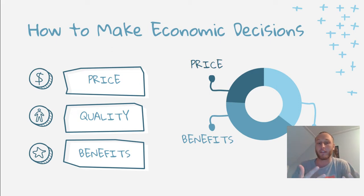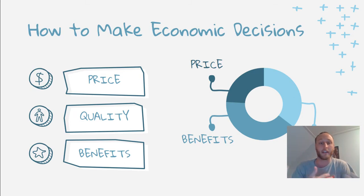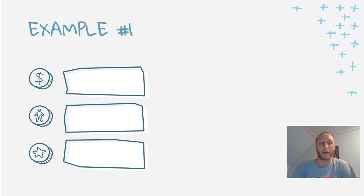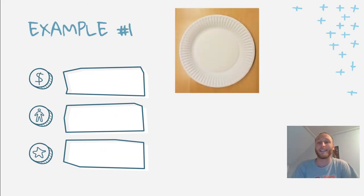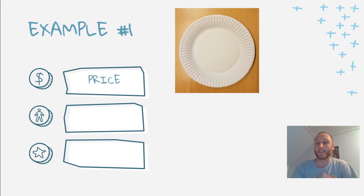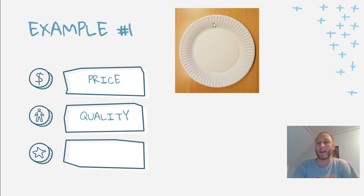When you're thinking about these three parts of the decision making process, some will have more priority than others depending on what item you're thinking about. For example, let's say I wanted to buy paper plates. Paper plates come in all different styles, qualities, and prices. When thinking about a cheaper paper plate, you might be able to buy a pack of 20 for a dollar at the Dollar Tree. However, the quality of that paper plate might not be as high.